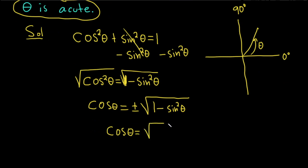That's really kind of cool. Cosine theta equals the square root of 1 minus sine squared theta.